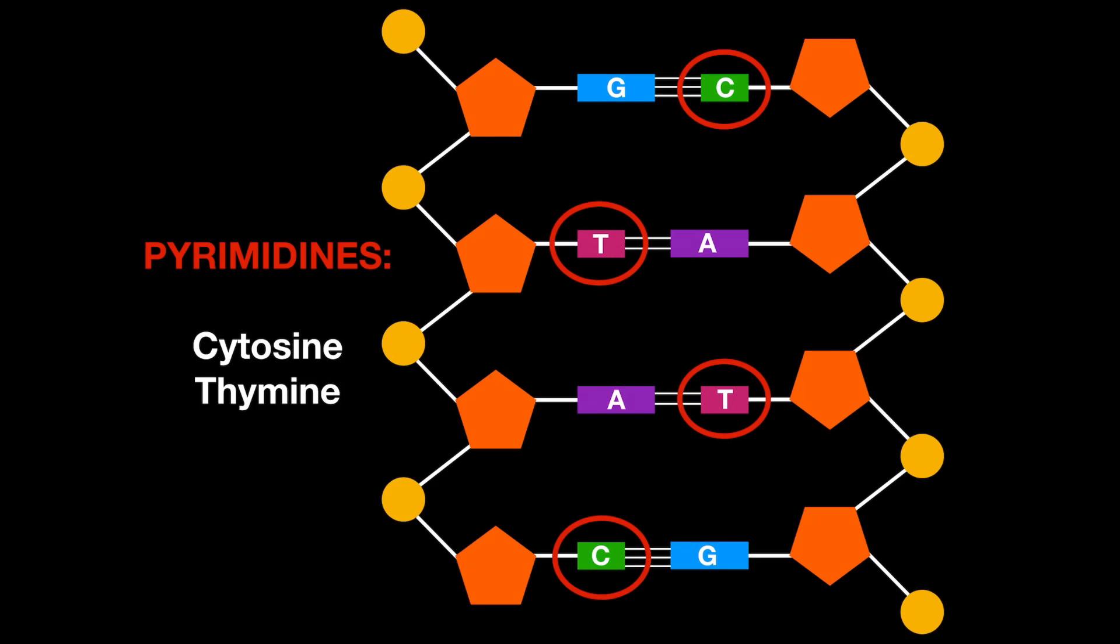Because these chemicals are only made up of one ring of atoms, you can see in a diagram of DNA that they are not as wide as the purines.